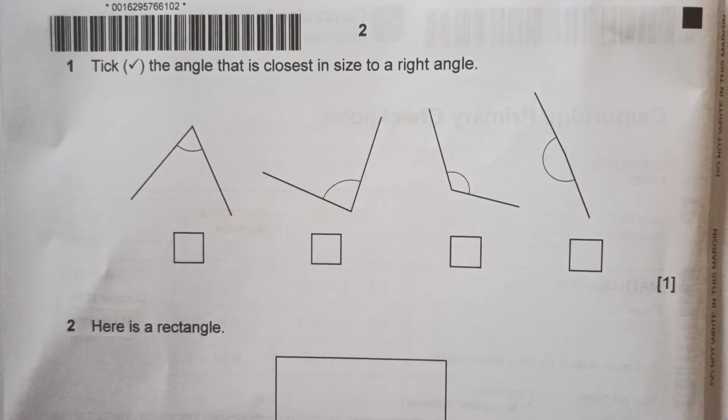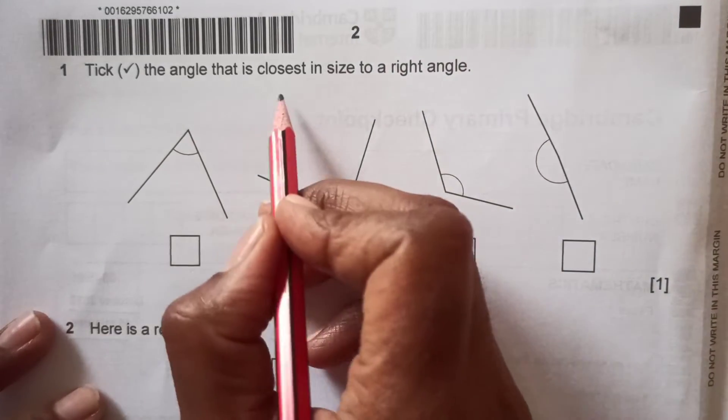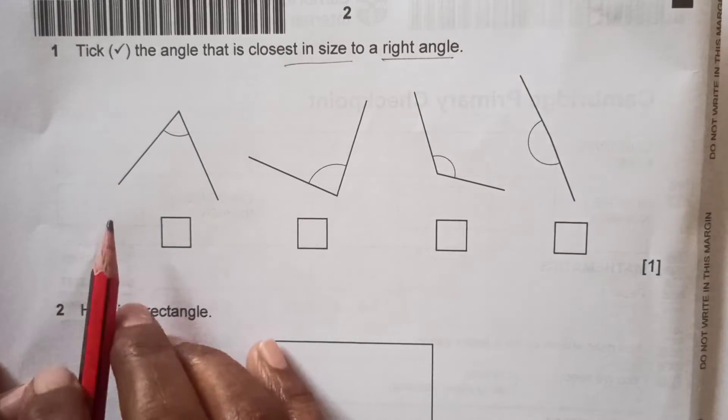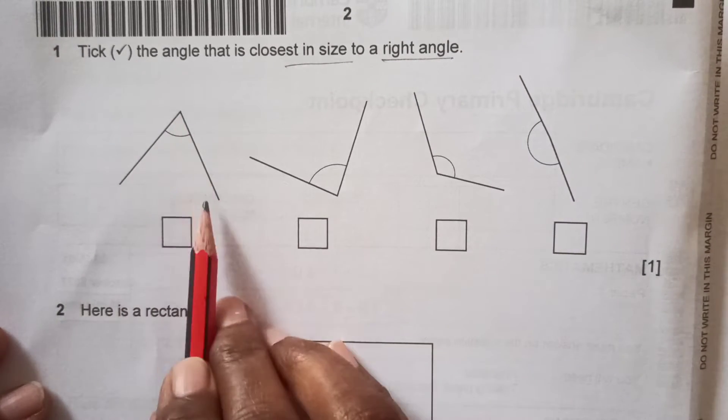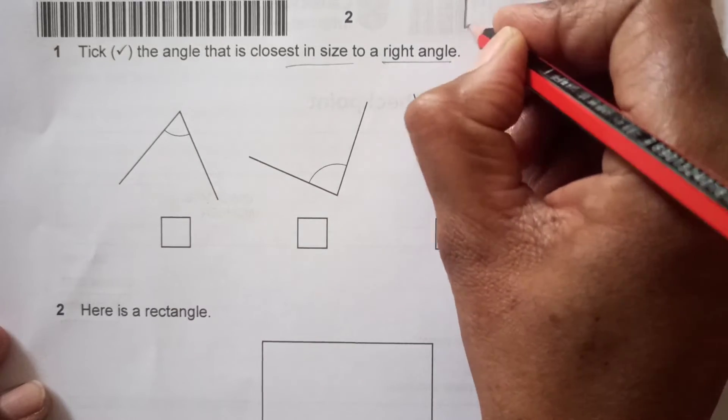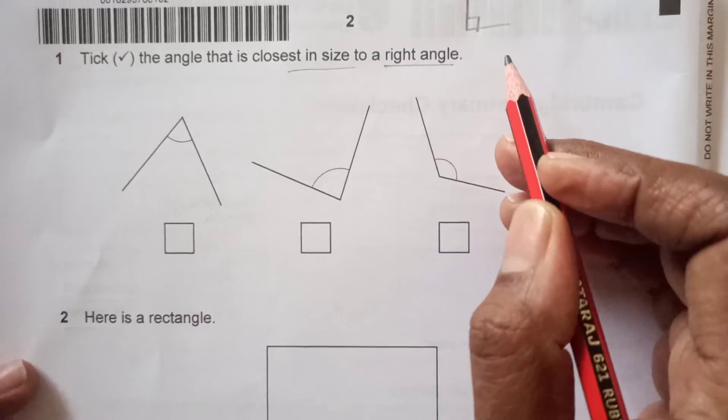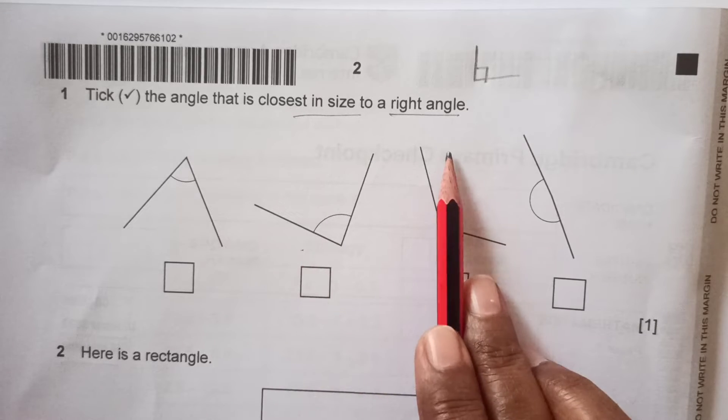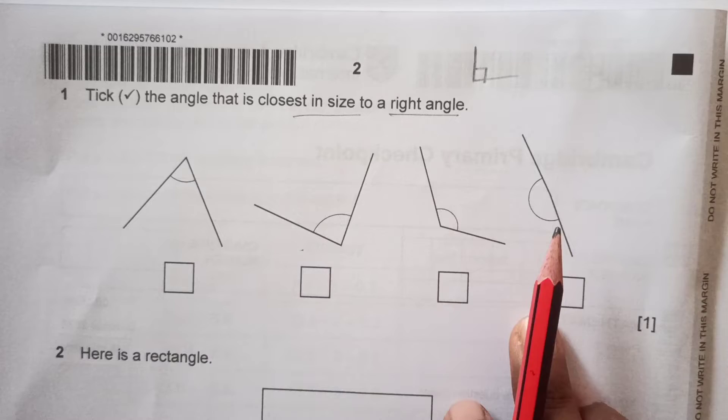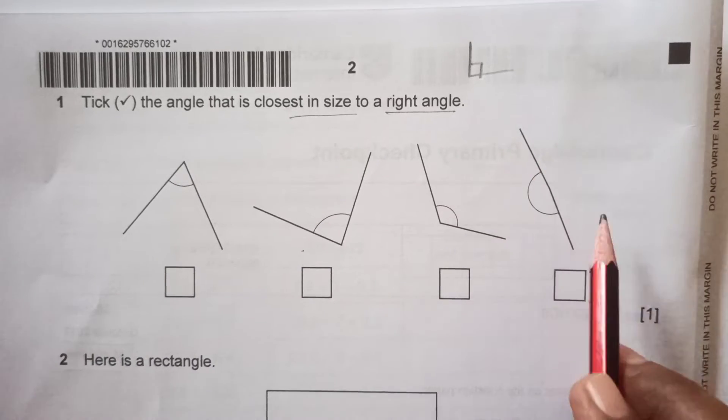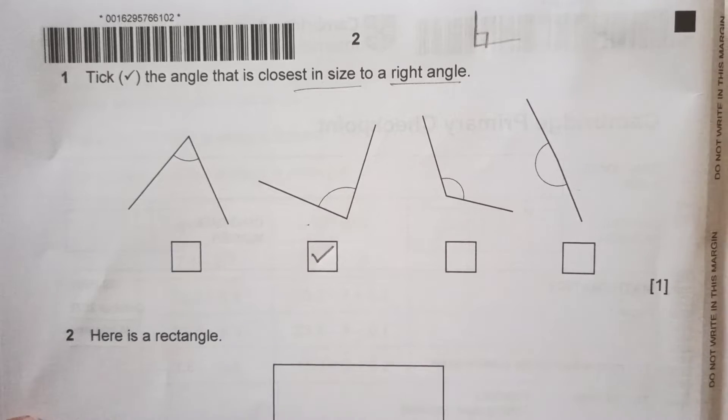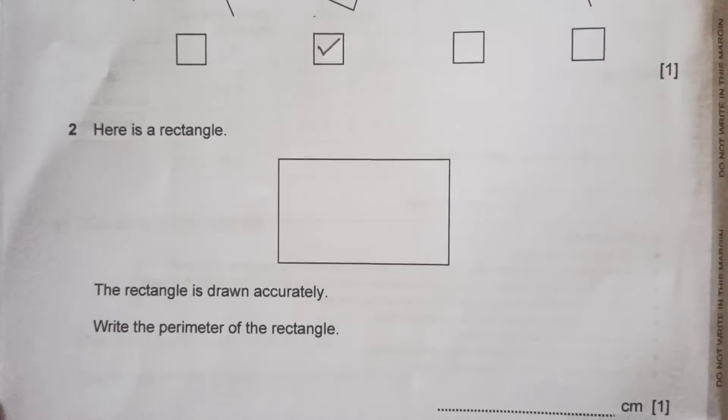Question 1: Tick the angle that is closest in size to a right angle. If you observe these angles, this is an acute angle, less than 90. This is nearly 90. A 90 degree angle usually looks like this, right? So this is the nearest one. This is a bit higher than 90, this is closer than 90, and this is obtuse. So this is going to be the correct answer, which is nearest to the 90 degree angle.